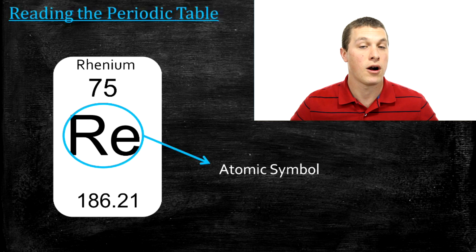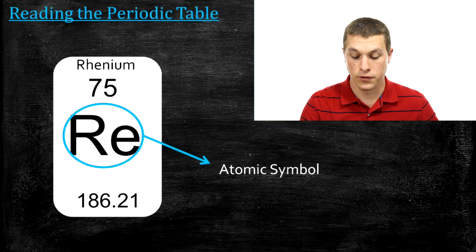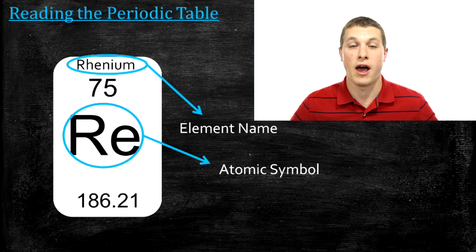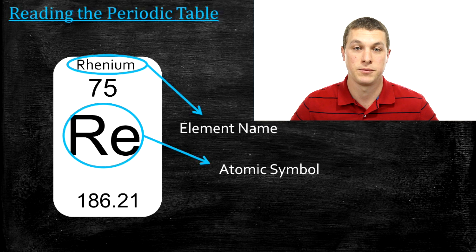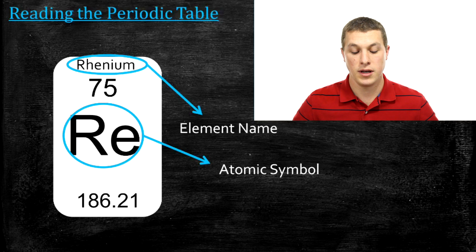But whenever we write RE, what we mean is rhenium. Now, some periodic tables contain the name spelled out in full, as you can see here. So sometimes you'll see the full element name listed, sometimes you won't. Depends on the periodic table. Those are pretty self-explanatory. RE is the atomic symbol, like the abbreviation for the element, and then you have the name of the element listed at the top.